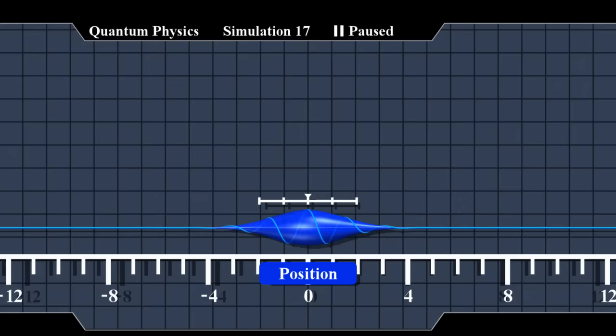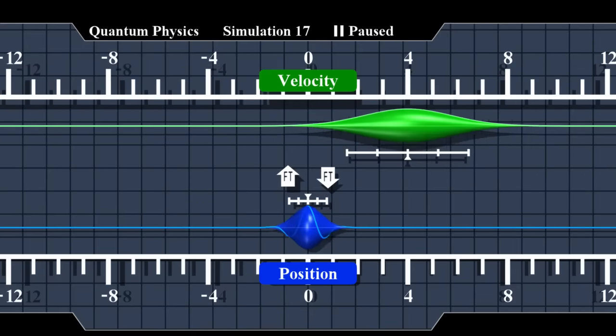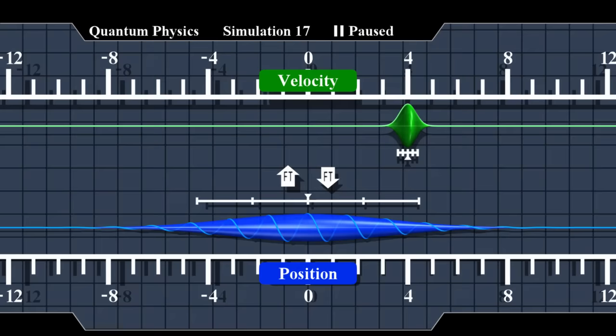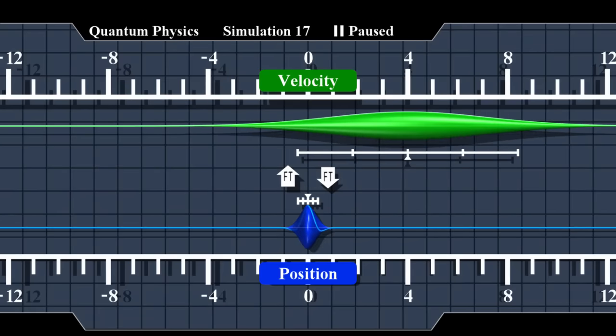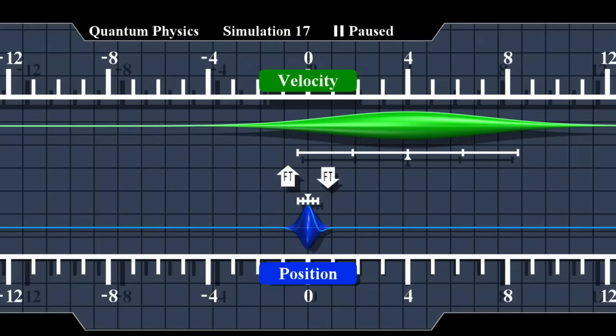Now here's a curious property of the Fourier transform. If one uncertainty is low, the other one must be high, and vice versa. They can't both be low. So if we know approximately where the particle is, we'll know little about its velocity, and the other way around.